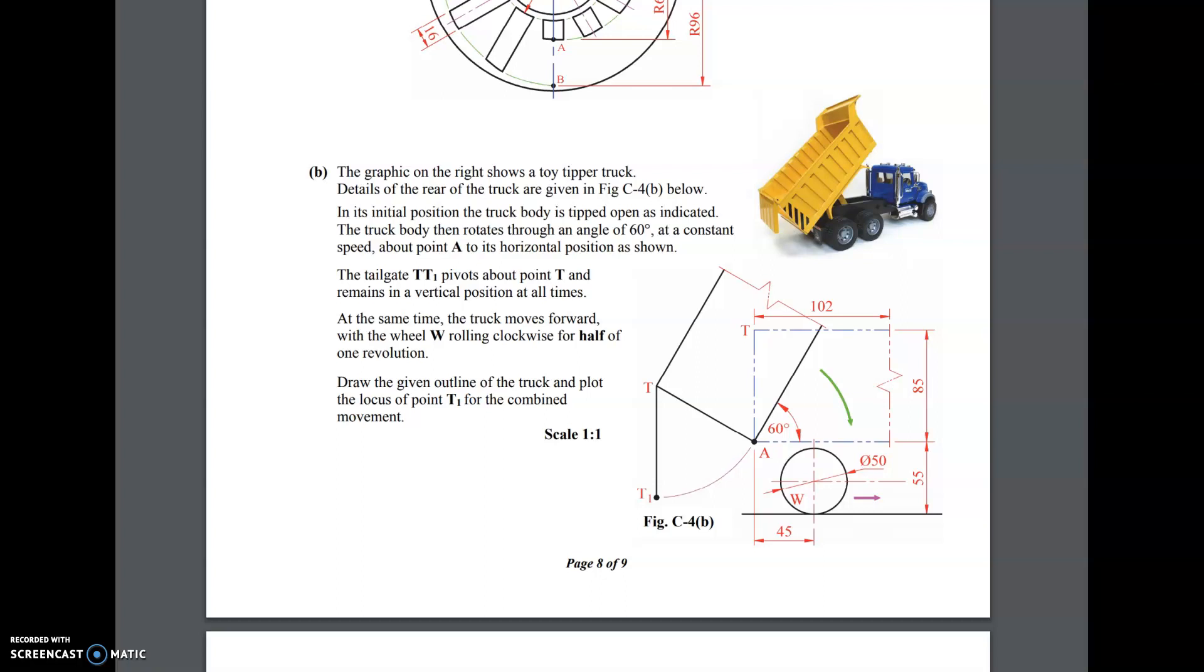The tailgate T, T1, pivots about point T and remains in a vertical position at all times. At the same time the truck moves forward with the wheels rolling clockwise for half one revolution. Draw the given outline of the truck and plot the locus of point T for the combined movement.